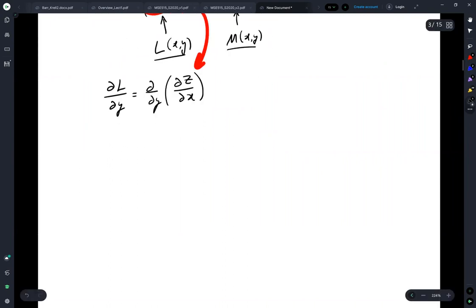And I can take dM/dx, which is then d/dx of ∂z/∂y. Okay.